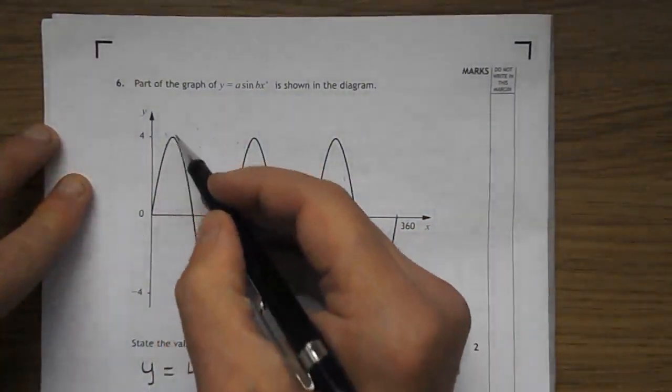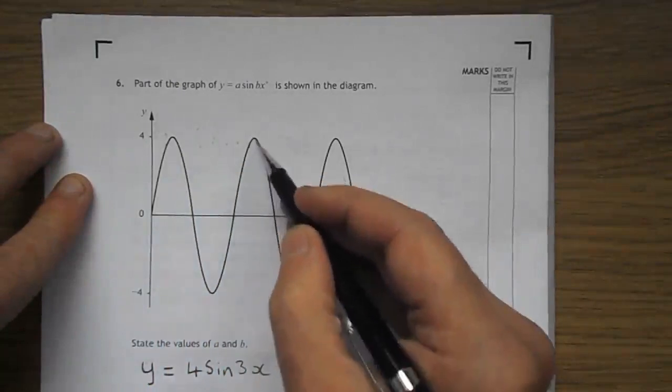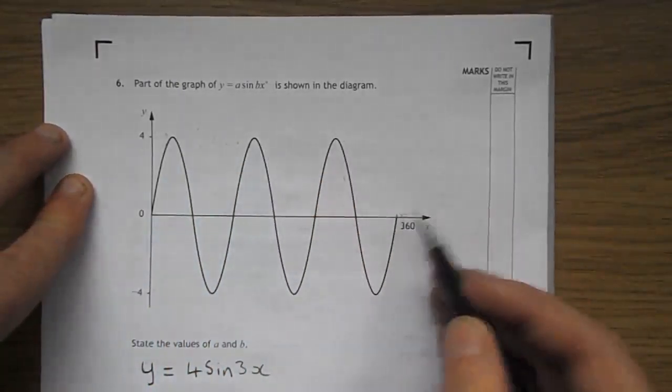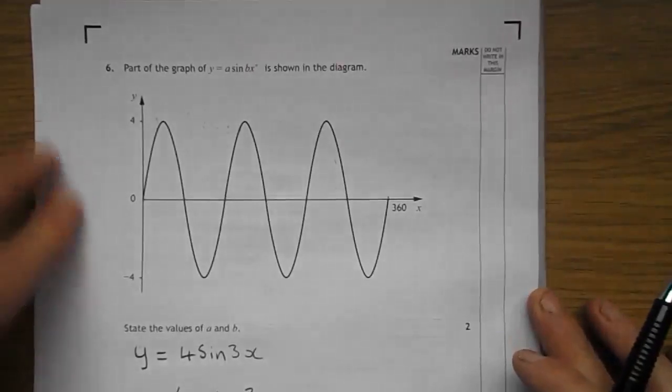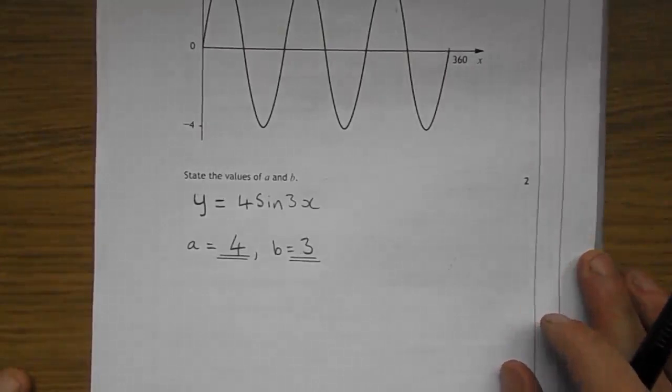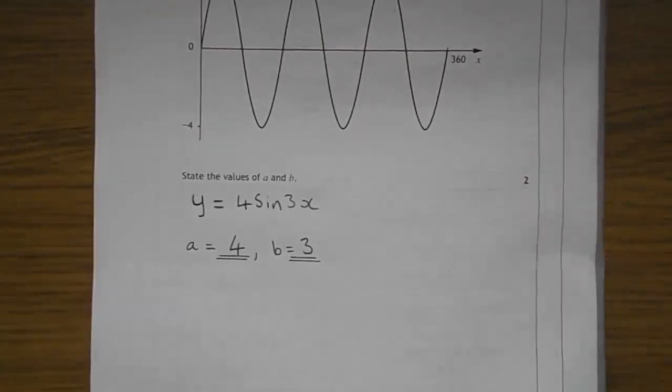The B is how many sine curves you get between 0 and 360. That's a quick way of getting B. So, let's do a little count here. Up, down. 1, 2, and 3. So, B is 3. So, the equation of that curve is 4 sine 3X. That makes A 4 and B 3.